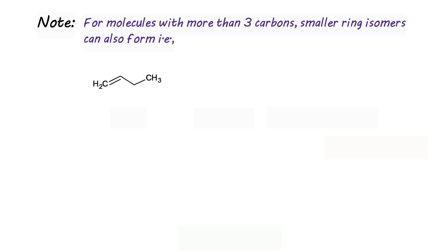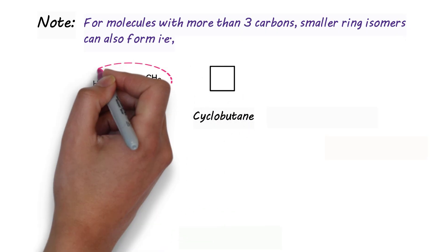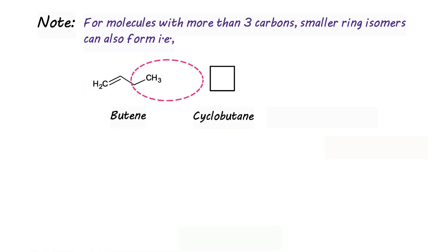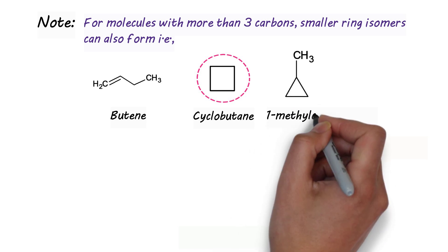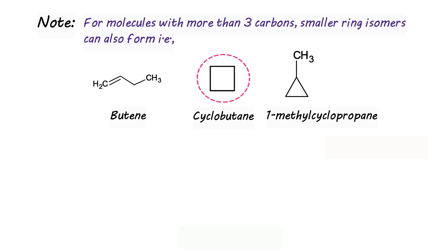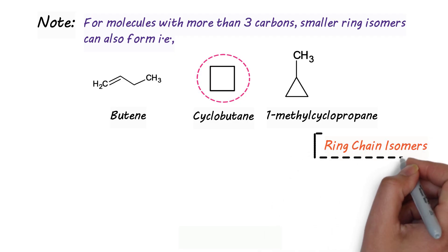For example, we have these two molecules. The first one is butene while the other is cyclobutane. So the unsaturated butene has been transformed into cyclobutane, having the same number of carbon atoms — so they are ring-chain isomers of each other. Now, as the ring system has four carbon atoms, which is more than three, smaller rings can also form — that is, we also have methylcyclopropane. All three are ring-chain isomers of each other.